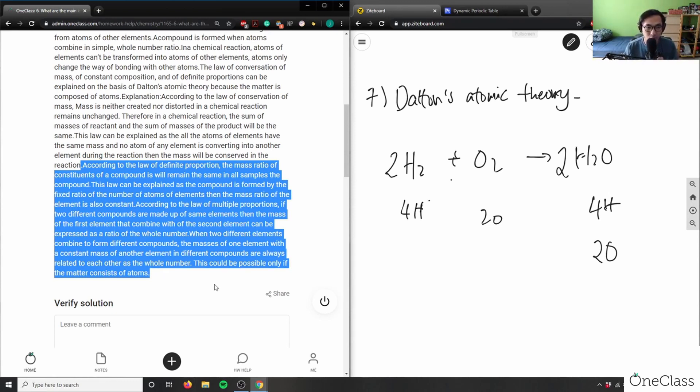According to the law of multiple proportions, if two different compounds are made up of the same elements, the mass of the first element that combined with the second element can be expressed as a ratio of a whole number. That's what we're doing in this case here.